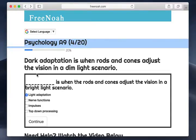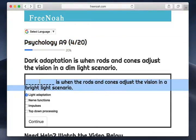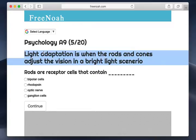Psychology assessment 9, question 4 of 20: Blank is when the rods and cones adjust to vision in a bright light scenario. So this is light adaptation. Light adaptation is the opposite of dark adaptation. Light adaptation is when the rods and cones adjust to vision in a bright light scenario.